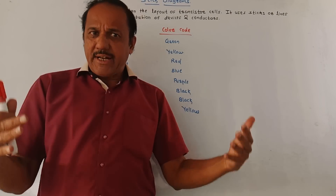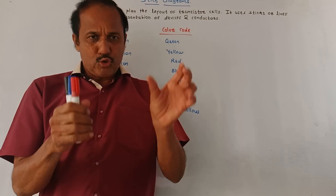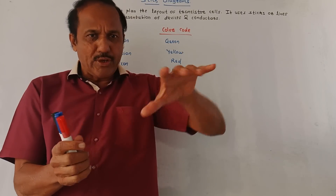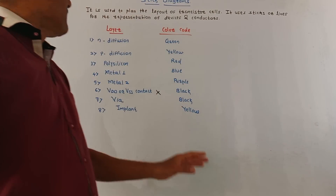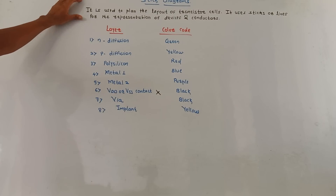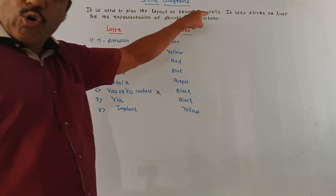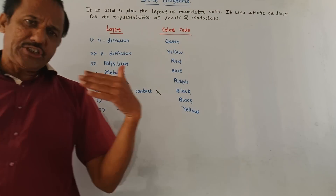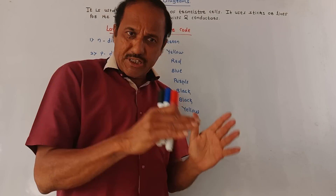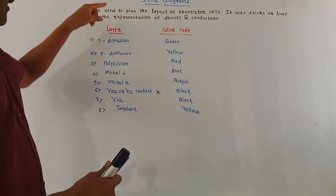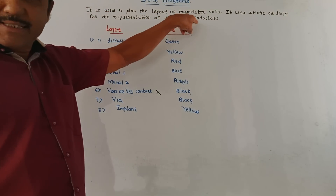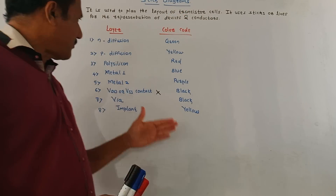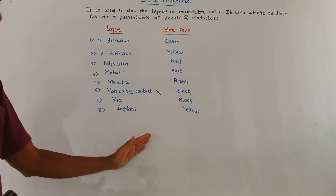It is not possible every time to draw the complicated diagram, so the STICK Diagram is the simplest form of diagram to represent the actual circuit. These diagrams are used to plan the layout of transistor cells. As the name indicates, it makes use of sticks or lines for the representation of devices and conductors. Different color codes are used for drawing the STICK Diagram.